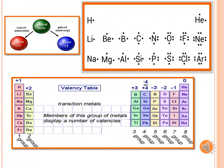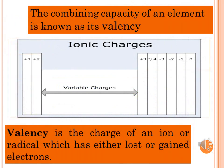Number of valence electrons is equal to the valence of an atom. Group number is also equal to the valence shell electrons. The combining capacity of an element is known as its valence, or valence is the charge of an ion or radical which has either lost or gained electrons.